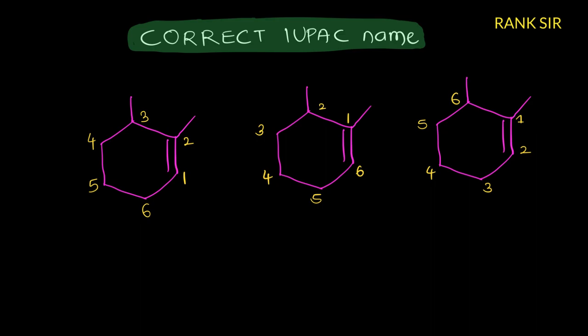If possible, the multiple bond got the lowest number — this is the lowest number. But the substituent got the second number. Therefore we have to check in the remaining structure which one got the lowest number for the multiple bond and also the lowest number for the first substituent.